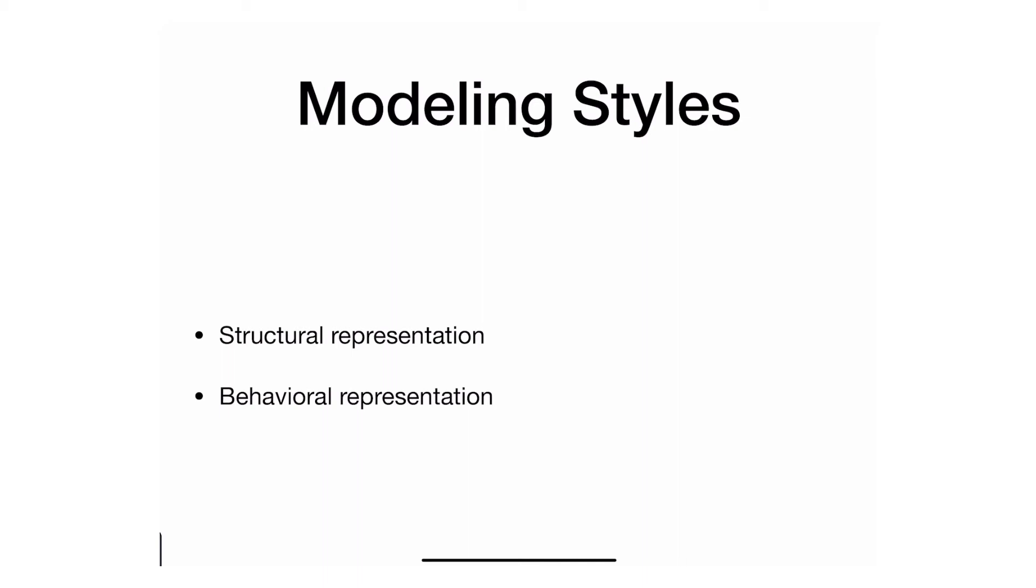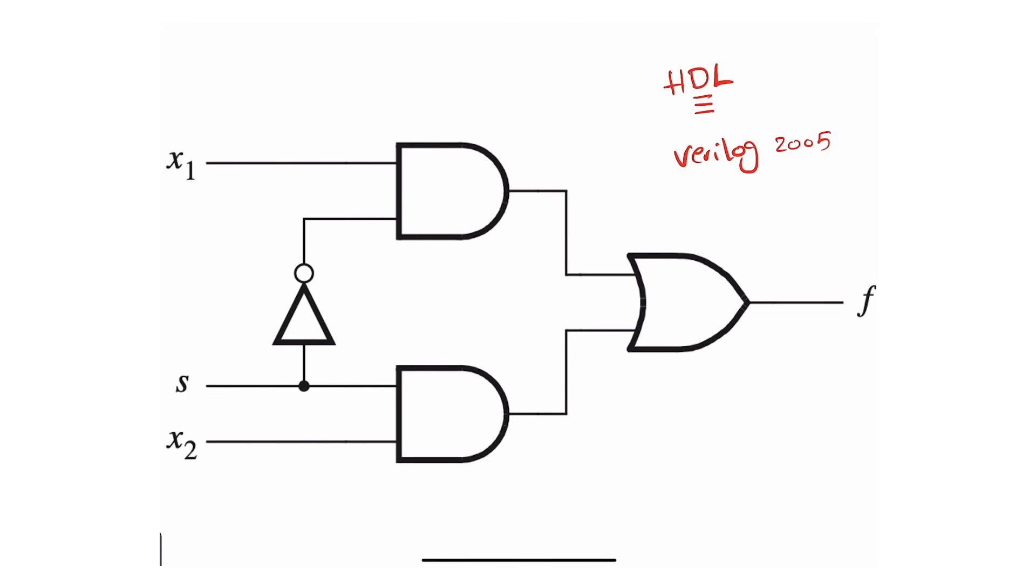These are generally called modeling styles. Some people do a lot of structural and a little bit of behavioral. Some do a lot of behavioral and a little bit of structural. I tend to use them interchangeably, whichever is easier at the time. What's the difference? Structural representation, as the name implies, describes the circuit's structure. I'll say hey, I want an AND gate and another AND gate and an OR gate here and a NOT gate, and I'm going to connect them. I'm describing the structure.